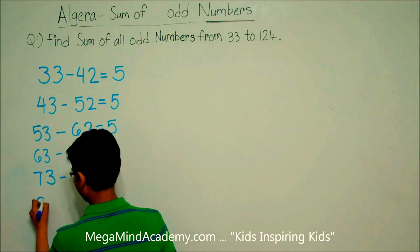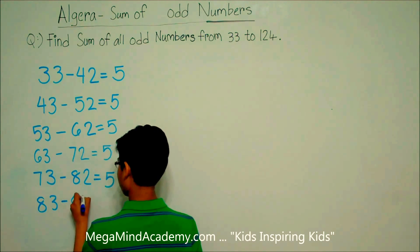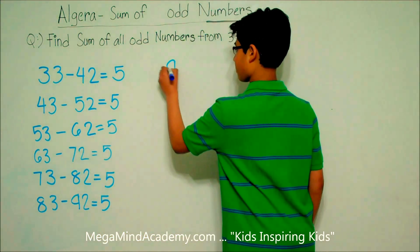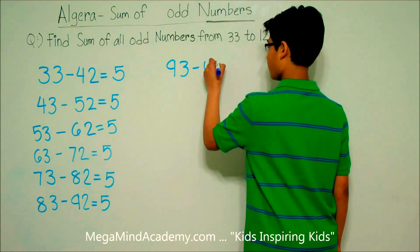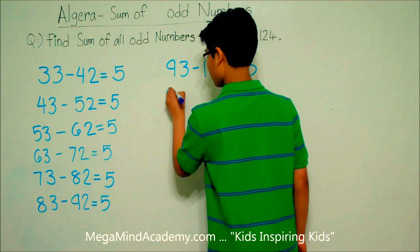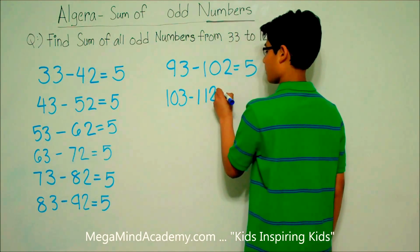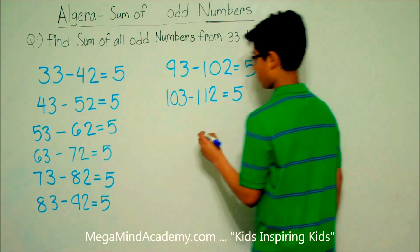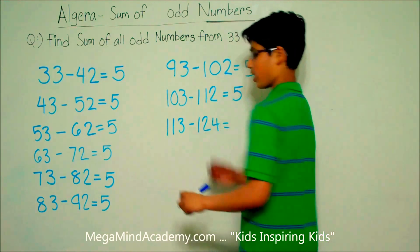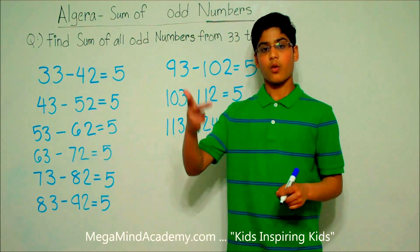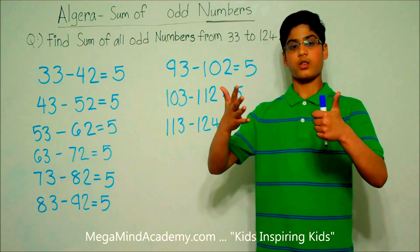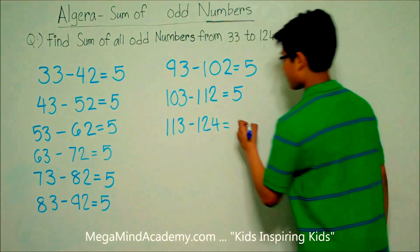From 83 to 92, there are 5 odd numbers. From 93 to 102, there are 5 odd numbers. From 103 to 112, there are 5 odd numbers. From 113 to 124, there are 113, 115, 117, 119, 121, and 123. So, there are 6 odd numbers.